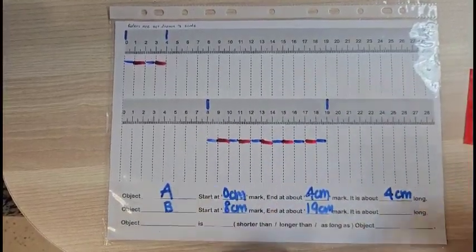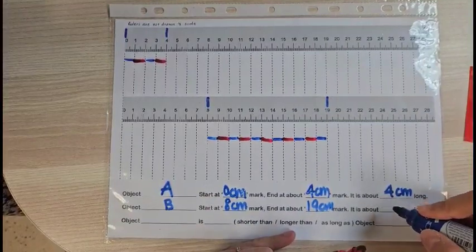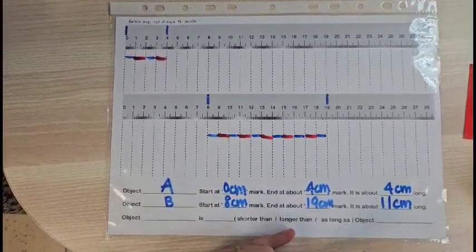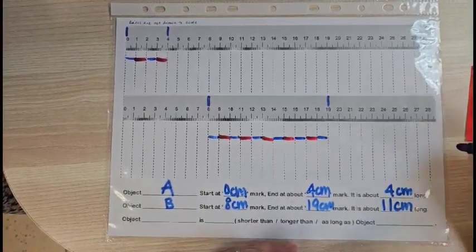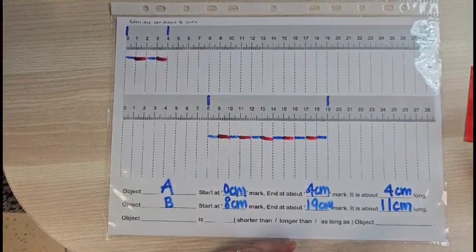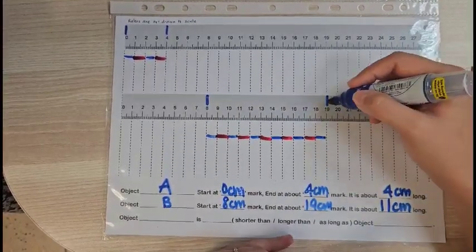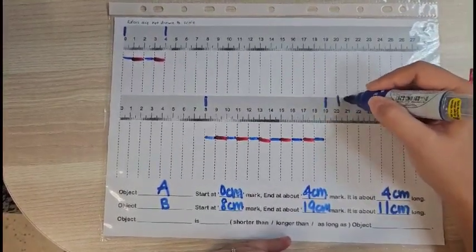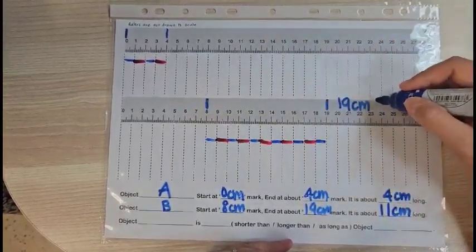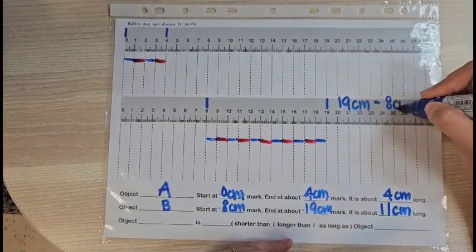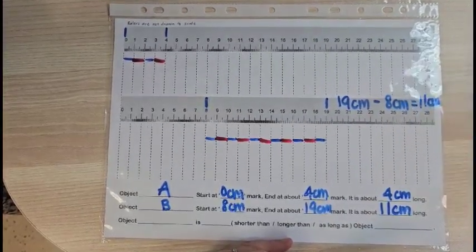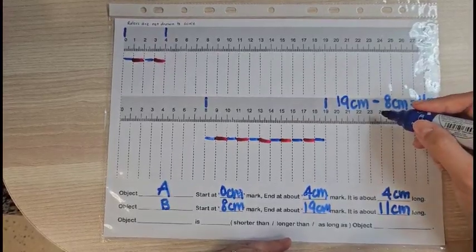So each space represents 1 cm, right? Therefore, 11 spaces would represent 11 cm. This is one way which I can count the length. Another way would be to take its ending point, 19 cm to minus the starting point, 8 cm to give me 11 cm.